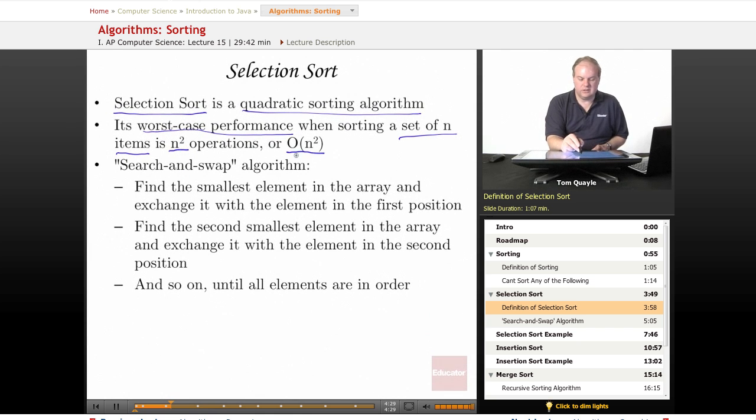In computer science we use something called the big O notation to indicate the performance of an algorithm. Big O stands for order, and this algorithm would be an order n squared algorithm, meaning that for a set of n items, the worst case performance would be n squared operations to be able to sort n items.